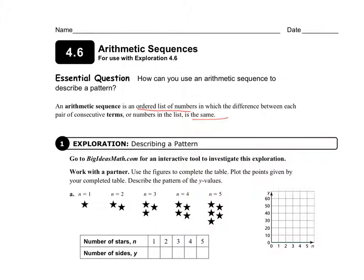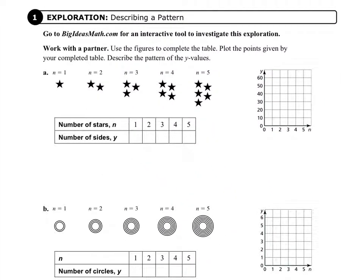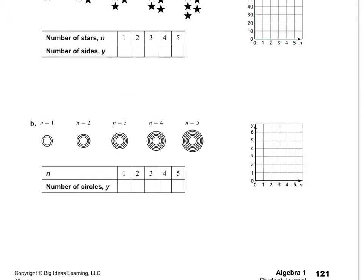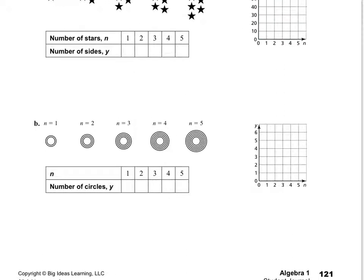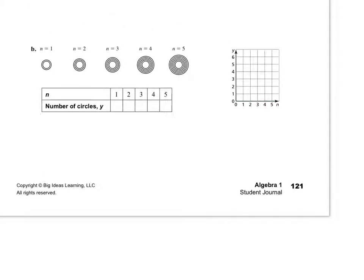Let's do a little exploration. We have a few patterns. The first one has some stars, and we want to find the pattern in the number of sides of the stars. n is the group number, and we've got five groups. Figure out the number of sides and record them in the table and graph it. On the next one, figure out the number of circles in each drawing — five drawings — and then graph your pattern. We'll do one more on the next page that's similar.